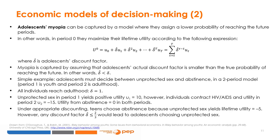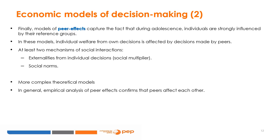This type of modeling can explain risky behaviors in a dynamic framework where agents are not fully capable of weighing future costs and benefits of present choices. Another characteristic of adolescents is that during this period, individuals are strongly influenced by their peers. This characteristic can be captured by economic models of peer effects, where individual welfare from one's own decisions is also affected by decisions made by other adolescents. There are at least two channels of social interactions: the social multiplier effect of individual decisions — each adolescent's decision has an externality, positive or negative, on others — and social norms. Most empirical analyses confirm that peers affect each other.